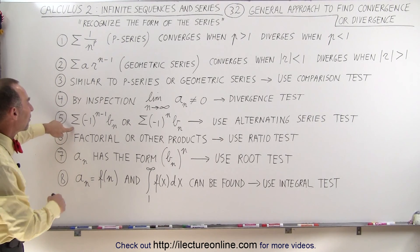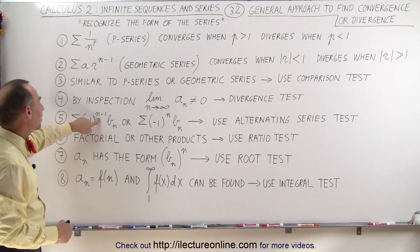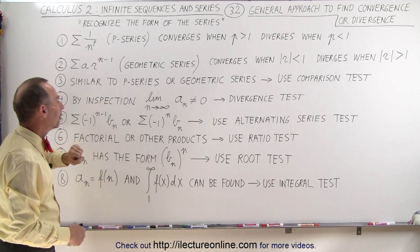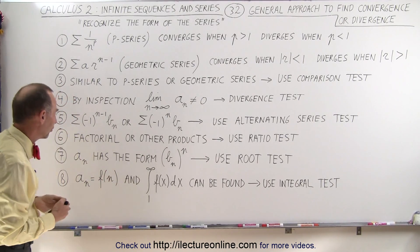Another type of series, when we have what we call the alternating series, we have minus 1 raised to the n minus 1 or minus 1 raised to the n times b sub n. We can see that we have to do an alternating series test to see if it converges or diverges.